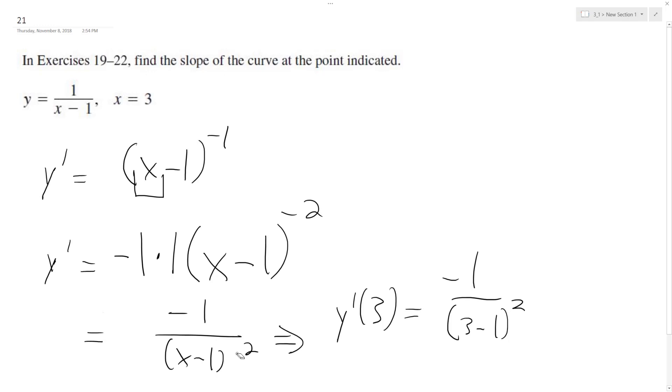So this is negative 1 over 2 squared, which is 4. Therefore m equals negative 1/4.